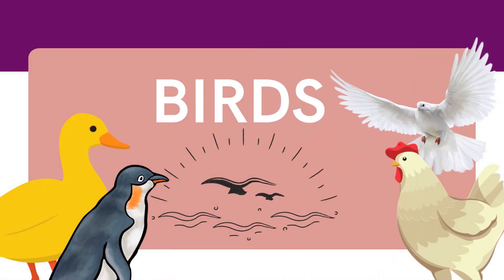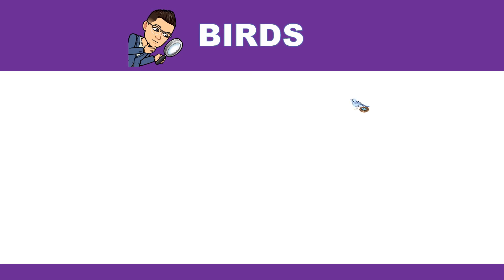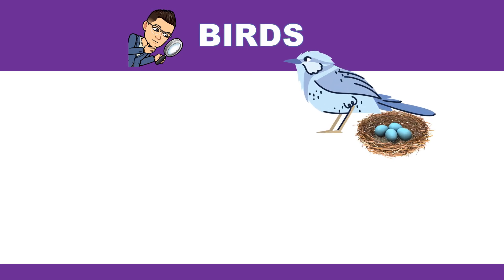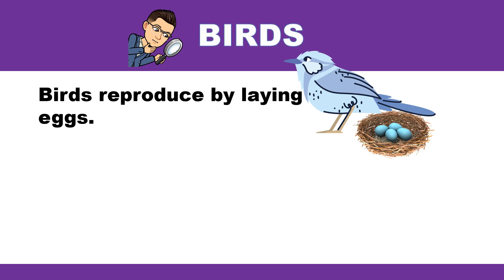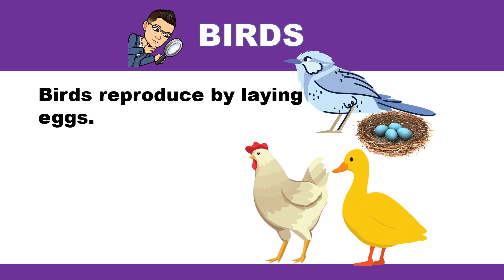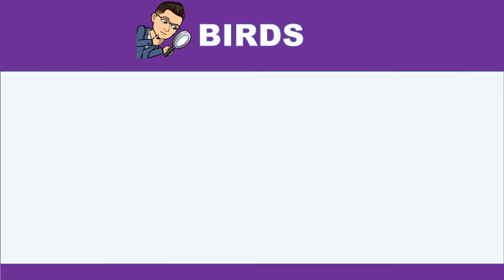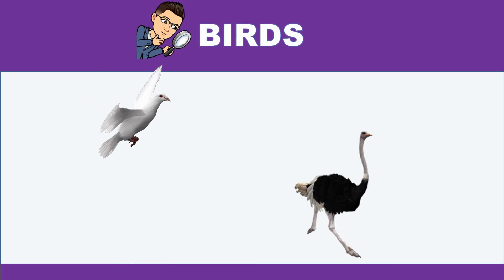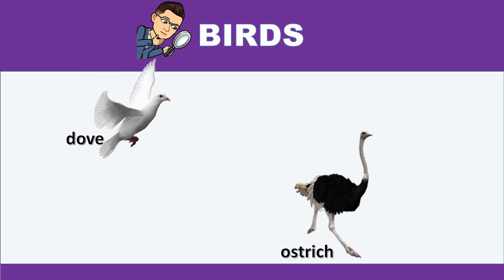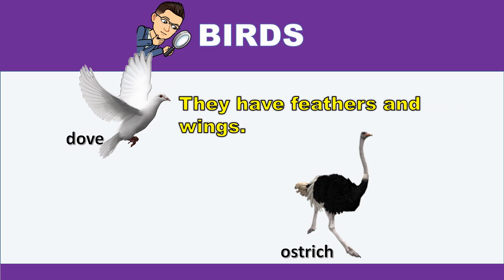Let us discuss the next classification of vertebrates, which is birds. From the picture, how do birds reproduce? Birds reproduce by laying eggs. How many legs do birds have? They have two legs. These animals are dove and ostrich — examples of birds. Will you describe their body coverings? They have feathers and wings.